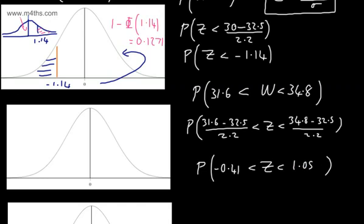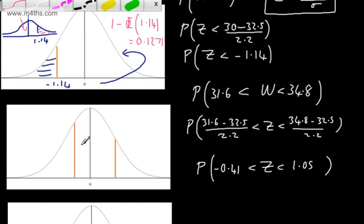So drawing a little sketch, let's have a look at the area that we're interested in. So let's put 1.05 just here, and let's put negative 0.41 just here. So we are interested in the area under the curve trapped between these two lines. We're after all of this.